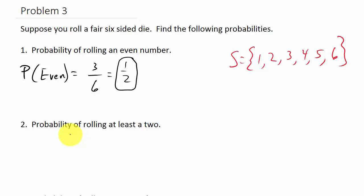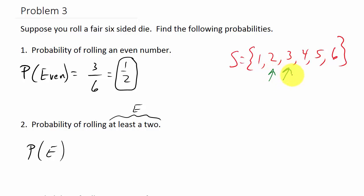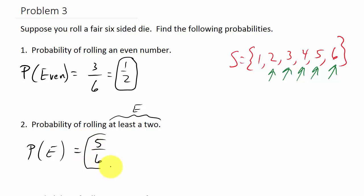Next, the probability of rolling at least a 2 — we'll call that event E. At least a 2 means we get a 2, 3, 4, 5, or 6. That's 1, 2, 3, 4, 5 successful outcomes, so the probability is 5 over 6.